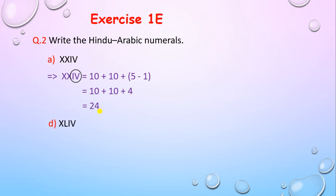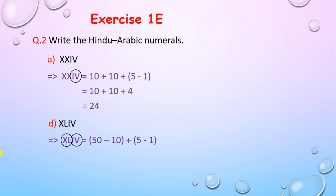Next example: XLIV. X comes before L — smaller symbol before bigger — so subtract 10 from 50 to get 40. Then IV: I comes before V, so subtract 1 from 5 to get 4. Total: 40 plus 4 equals 44.